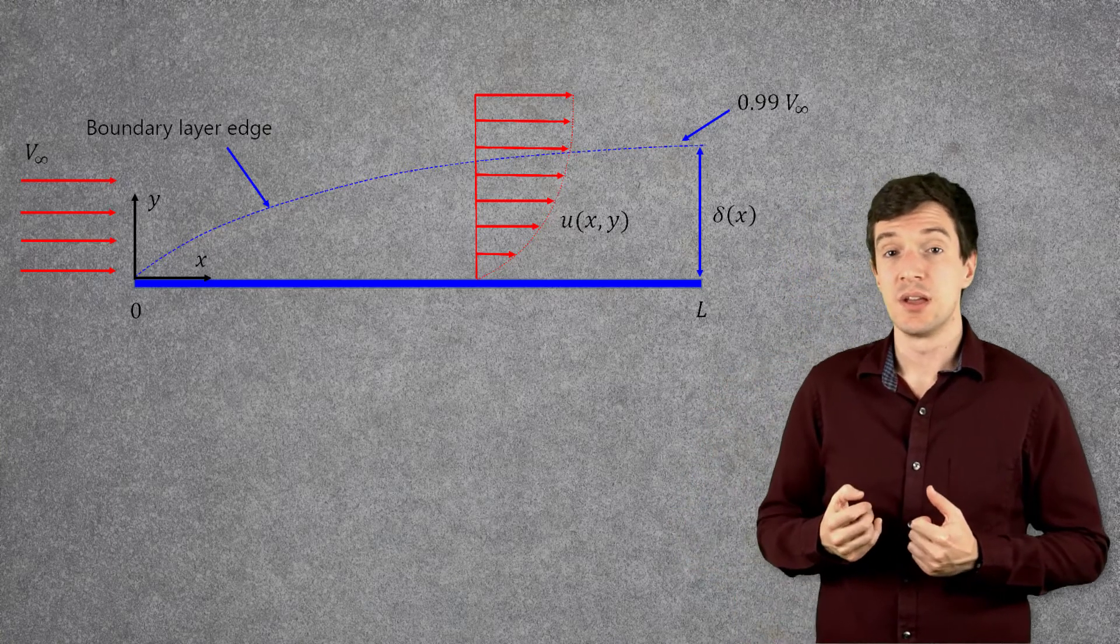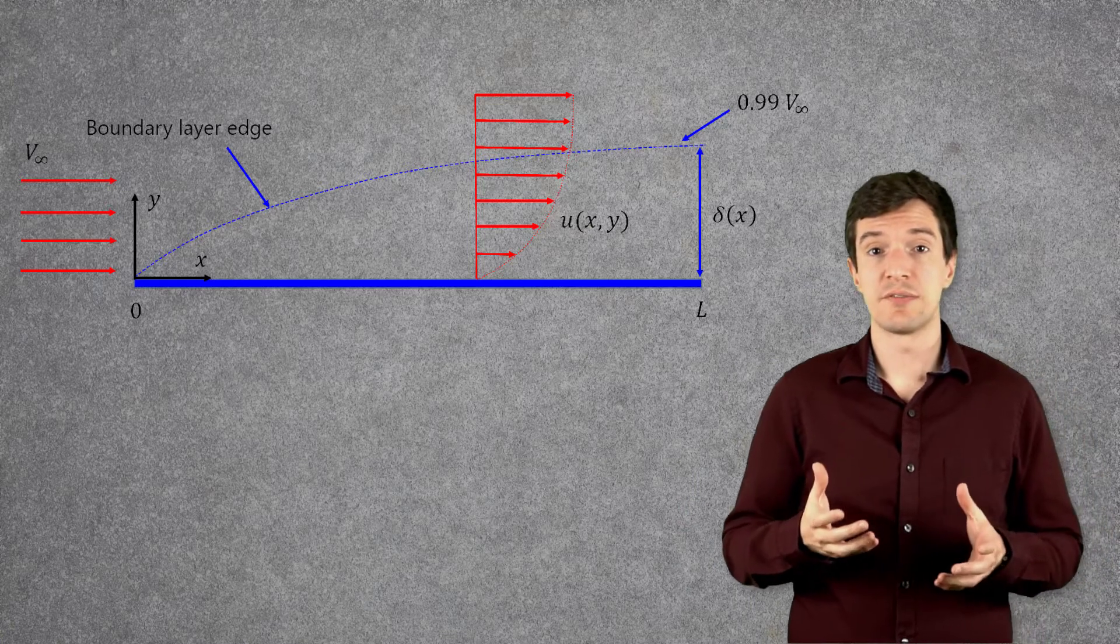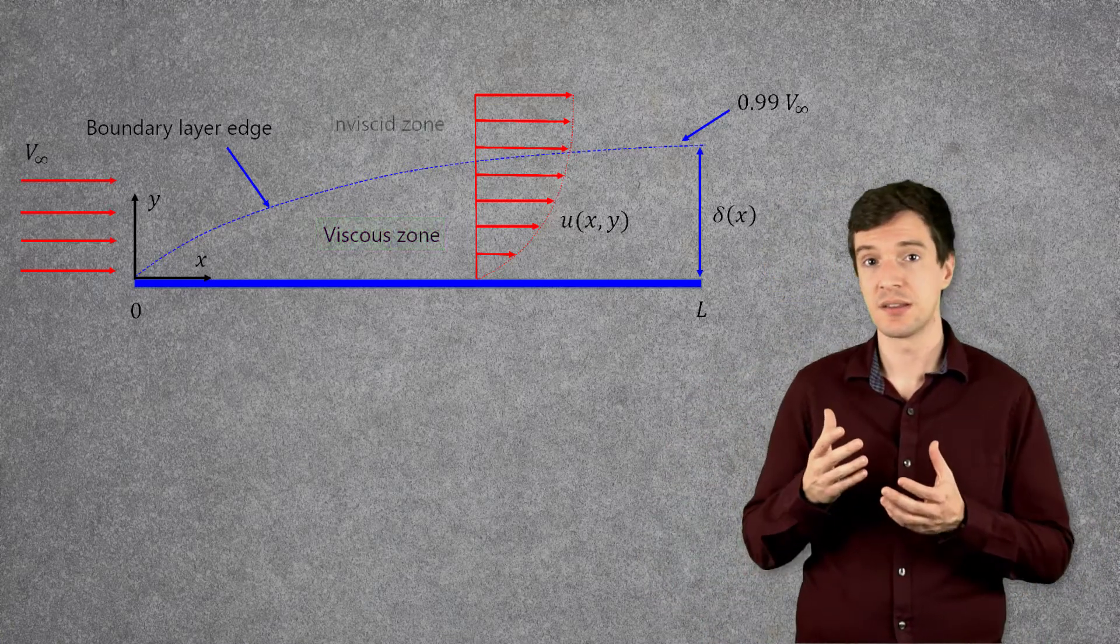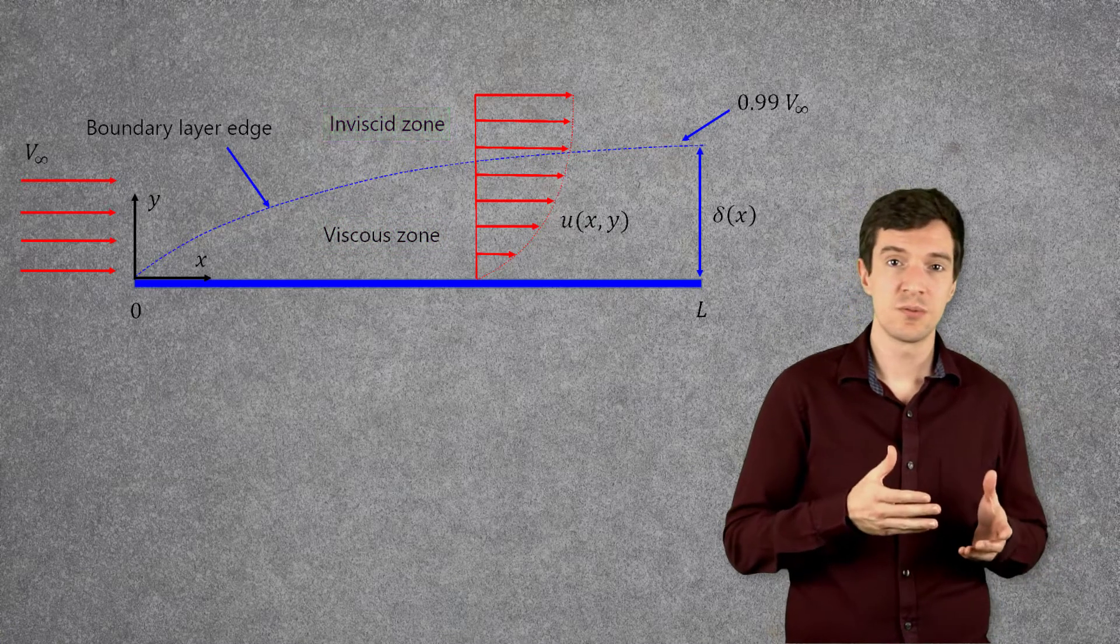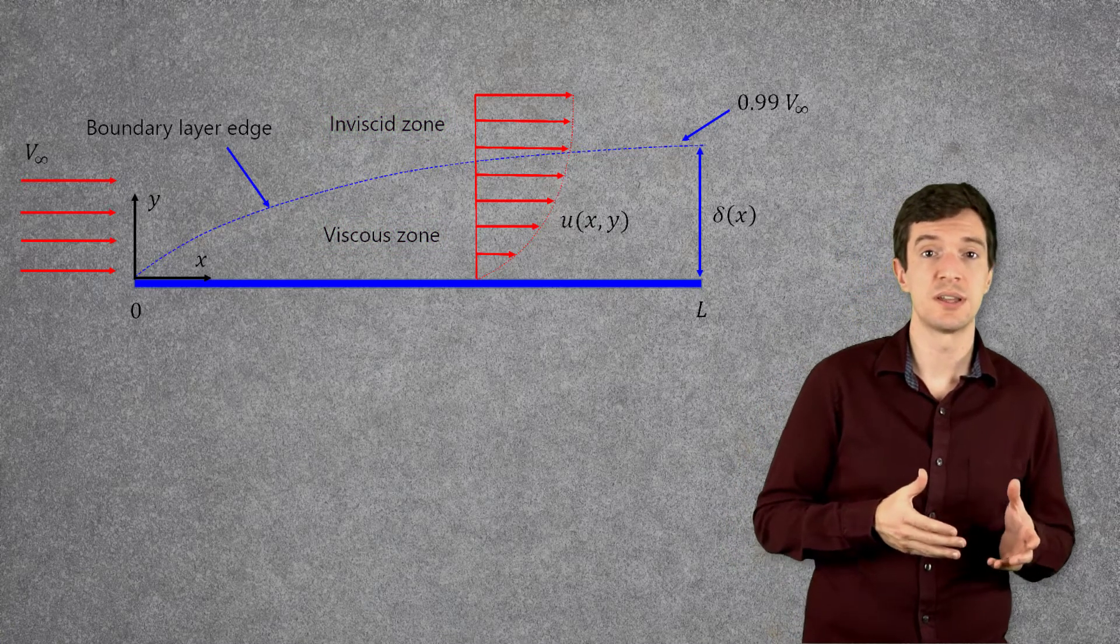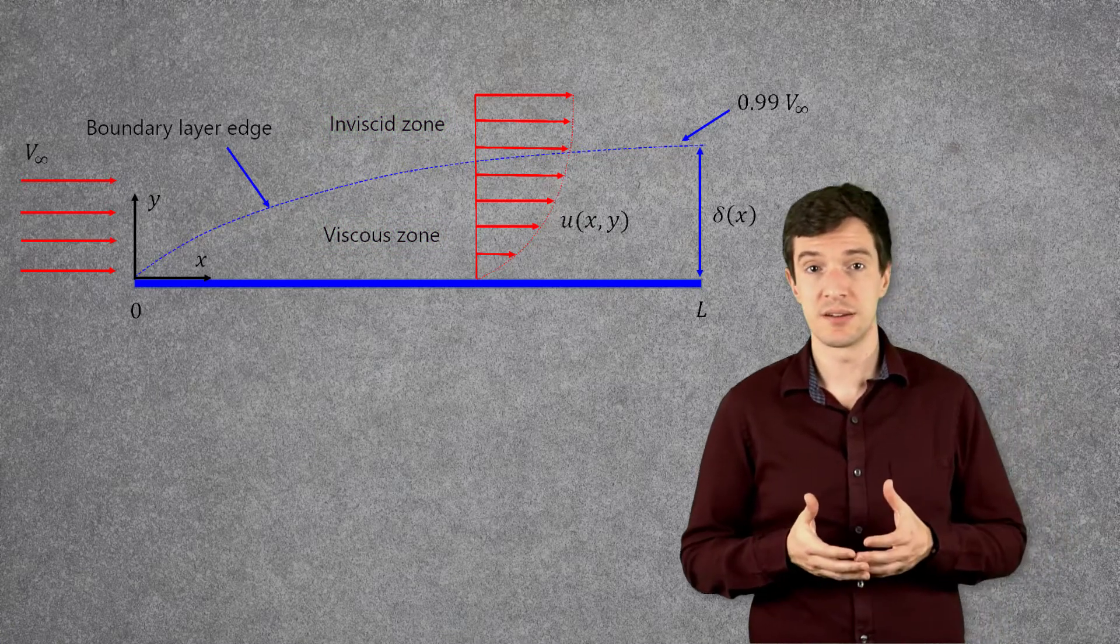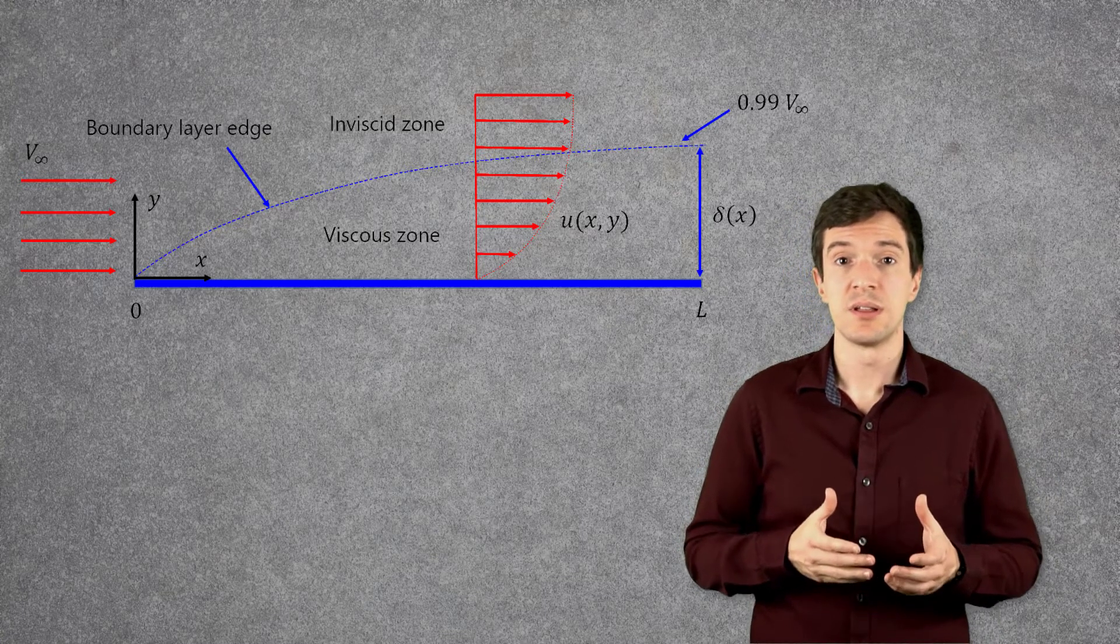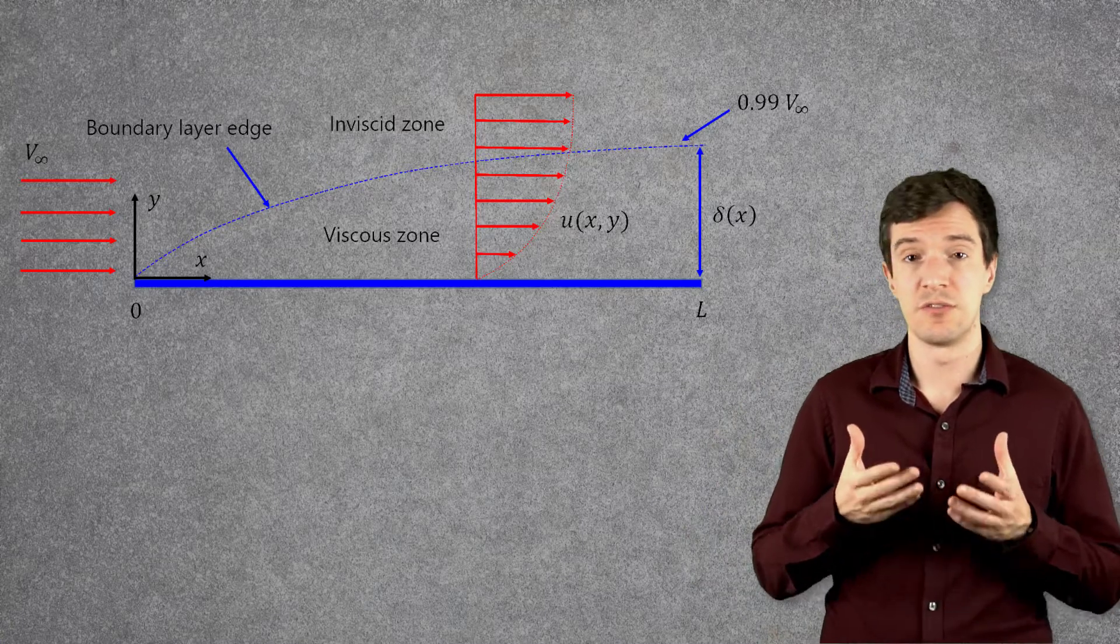Now you can see that we have two different regions: an inner one and an outer one. The inner one is a viscous zone that defines the boundary layer. The outer one is an inviscid zone where we can assume that the fluid is inviscid.